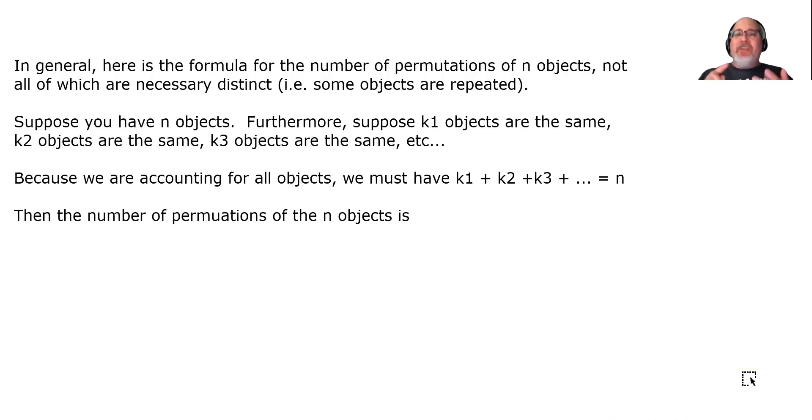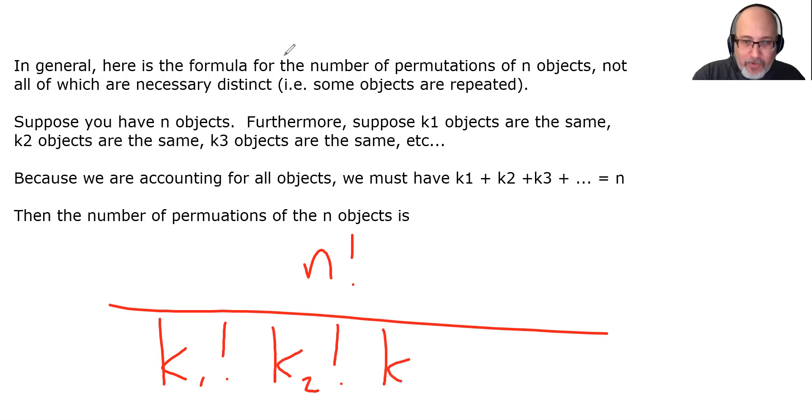All right, so we have n objects, we have K1 of the first object, K2 of the second object, K3 of the third object, all the way down to however many. The sum of all the Ks is equal to the total. Then the number of permutations of the n objects is n factorial over K1 factorial, K2 factorial, K3 factorial, dot dot dot. So, in other words, if an object is repeated, you just divide by that count's factorial. It's really pretty straightforward once you do a couple. So, let's do one more.